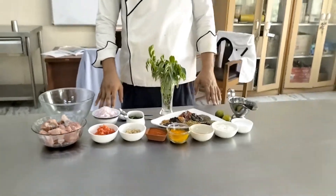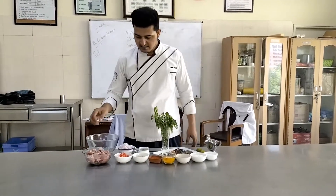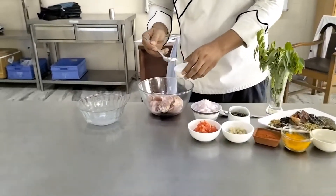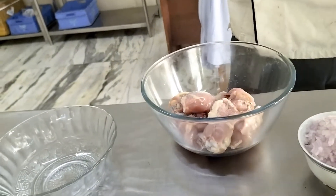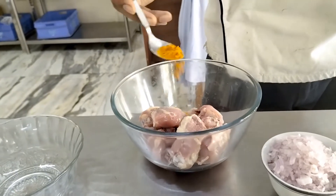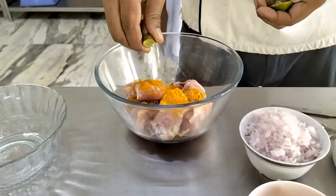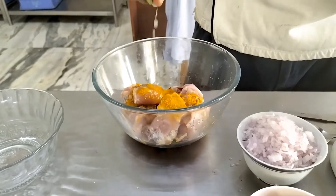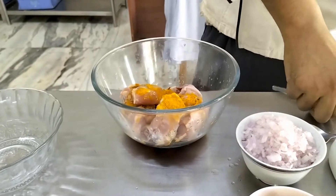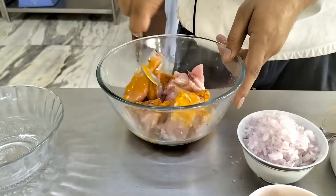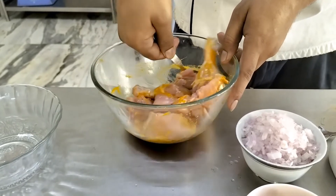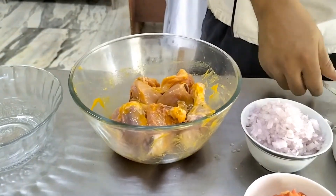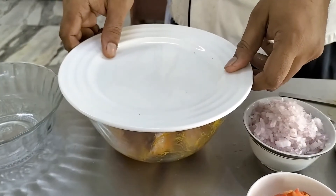Now we marinate the chicken. Put the chicken into a separate bowl and add salt, turmeric powder, and lemon juice. Mix well so the flavour gets inside the chicken. Then cover with a lid and put it in the refrigerator for at least 30 minutes.